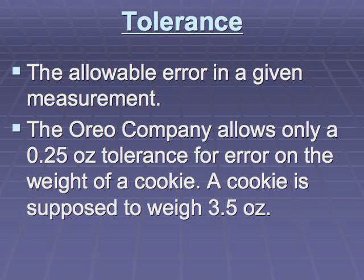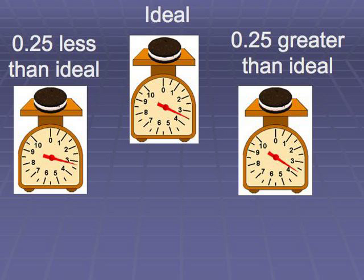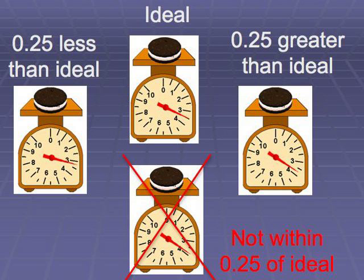Tolerance is the allowable error in a given measurement. Suppose the Oreo company allows a 25 hundredths ounce tolerance for error on the weight of a cookie, and a cookie is supposed to weigh 3 and 5 tenths ounces. The ideal weight is 3 and 5 tenths ounces. The Oreo can be 25 hundredths ounces less than the ideal or 25 hundredths ounces greater than the ideal. But if the cookie isn't within that range, then it doesn't meet the tolerance required by the company.